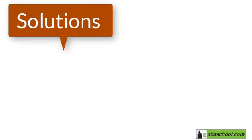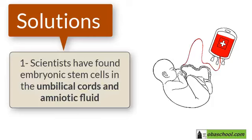However, scientists are trying to solve these problems. Firstly, scientists have found embryonic stem cells in the umbilical cord of newborn babies and inside the amniotic fluid that surrounds the fetus. Harvesting stem cells from these sources may help avoid some of the ethical issues.